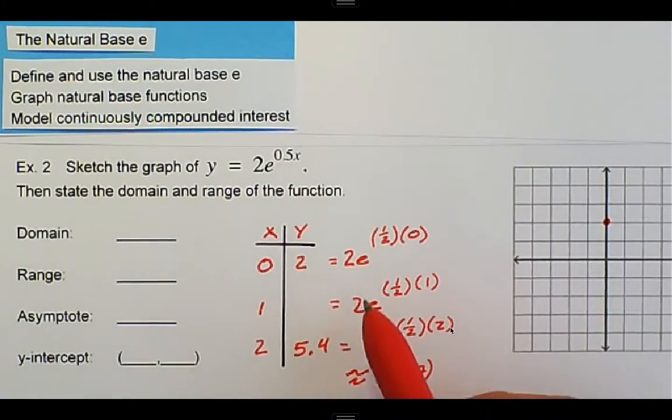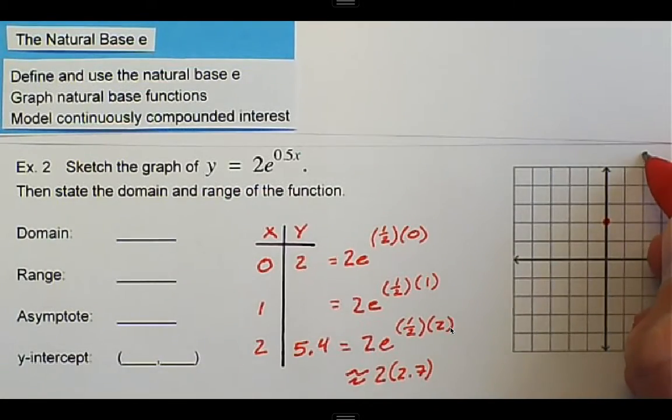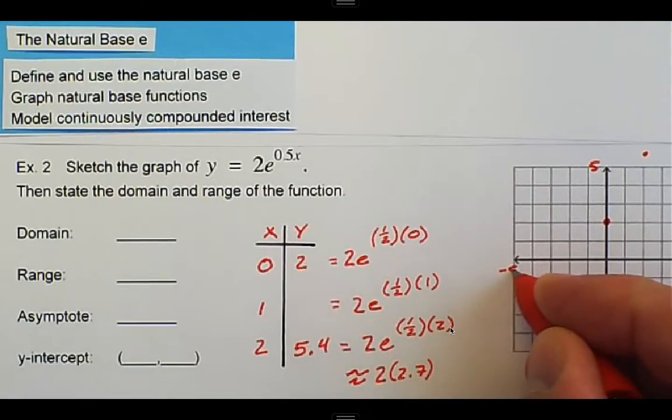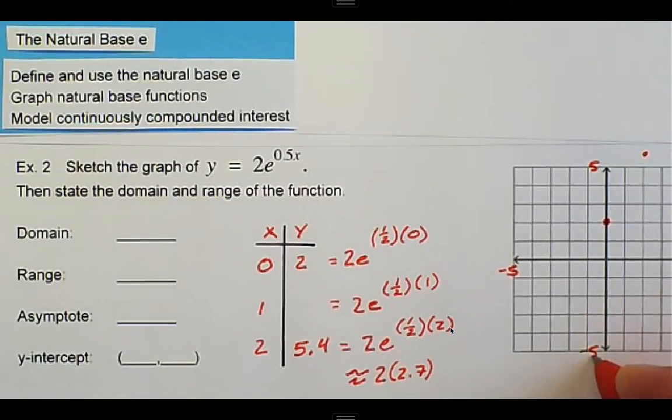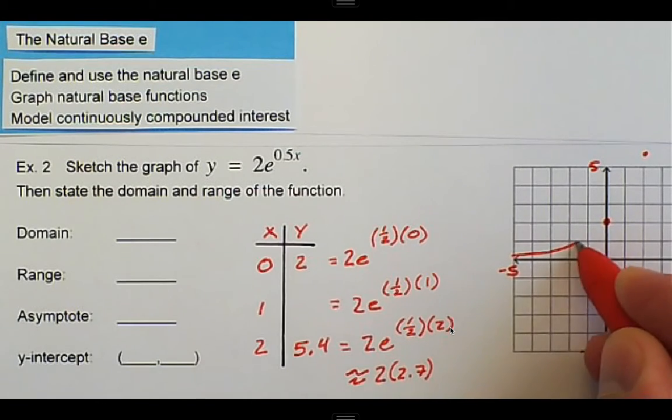And then we have the point 2, 5.4. So over 2, up to 5.4, a little bit above 5. We have negative 5 and 5 on our axes, and then we can graph the curve that goes between them.